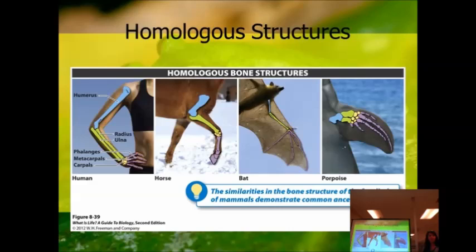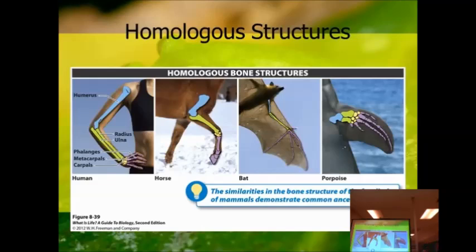Humans walk upright and use our arms for grasping things, so our bones are situated the way that they are. We could never run the way a horse does on its forelimbs, so it's developed a different use. The bat has the same bone structures but in a different pattern so that it can fly, and the porpoise so that it can glide through the water. They have similar bone structures, and at one point, millions and millions of years ago, we may have come from a common ancestor.